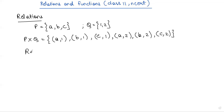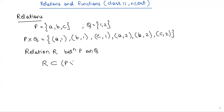If I call R my relation, R between P and Q, then R is a subset of the Cartesian product P cross Q. This is how we define relations in mathematics.